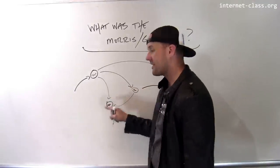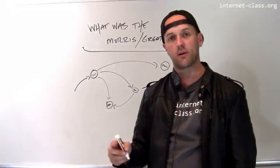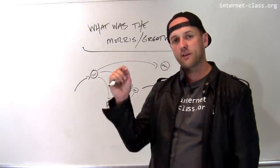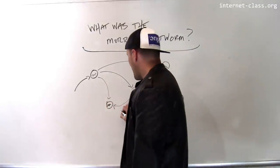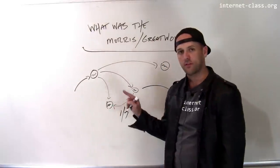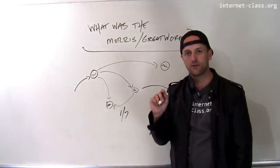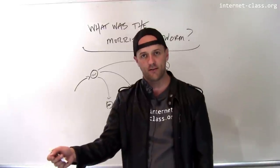But this time when the worm tries to infect the computer, it's going to do the following. It's going to flip a coin, basically, and one out of seven times, even if this worm is already here, it's going to install another copy of itself.